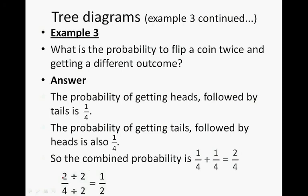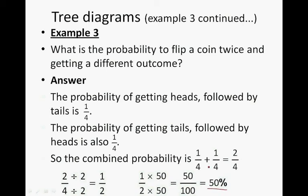To simplify the fraction 2/4: divide the top by 2 and the bottom by 2, giving us 1/2. As a percentage, that is 50 out of 100, which is 50%. We could also go 1/2 times 100, which gives 50%. There is a 50% probability of flipping a coin twice and getting a different outcome.